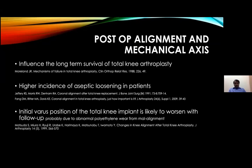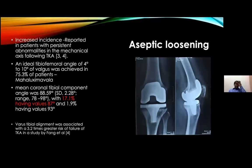Post-op alignment is very important and there is sufficient literature on this. Poor alignment leads to aseptic loosening of the tibia, which is more common than femoral loosening. There is literature showing that aseptic loosening is common with varus alignment, whether from the femur or the tibia. The ideal alignment of 4 to 10 degrees of valgus is achieved in only 75% of cases, as published by Malak Shimola. Around 17% have varus and 1.9% have valgus alignment. Varus tibial alignment is associated with a 3.2 times greater risk of failure in TKA, as studied by Fang et al.